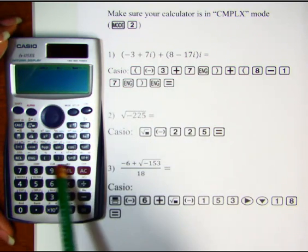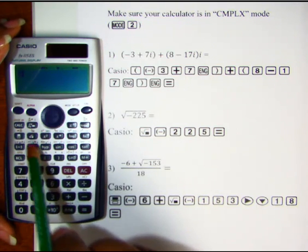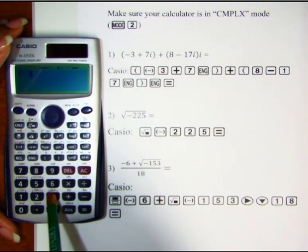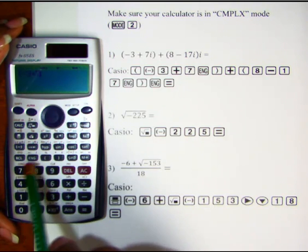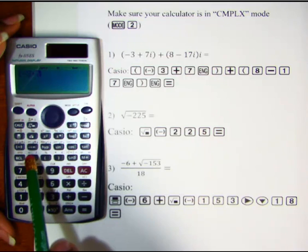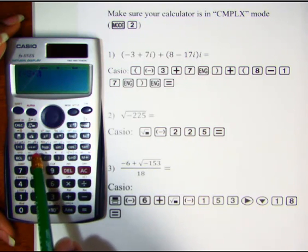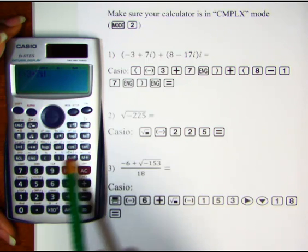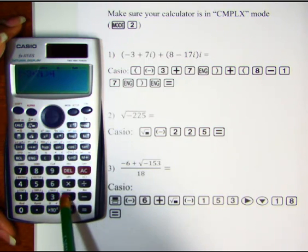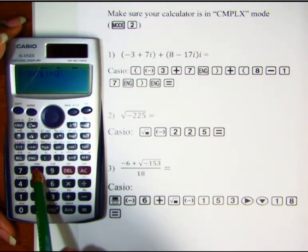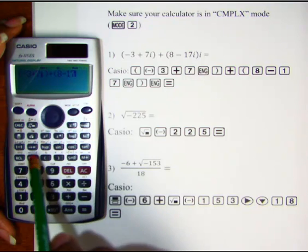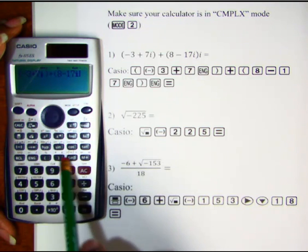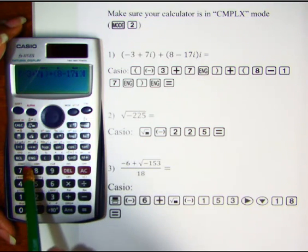Let's start by hitting left parenthesis, then negative 3 plus 7. Our ENG key is what we hit to access i, so ENG, close parenthesis, plus, open parenthesis, 8 minus 17, ENG, close parenthesis, and